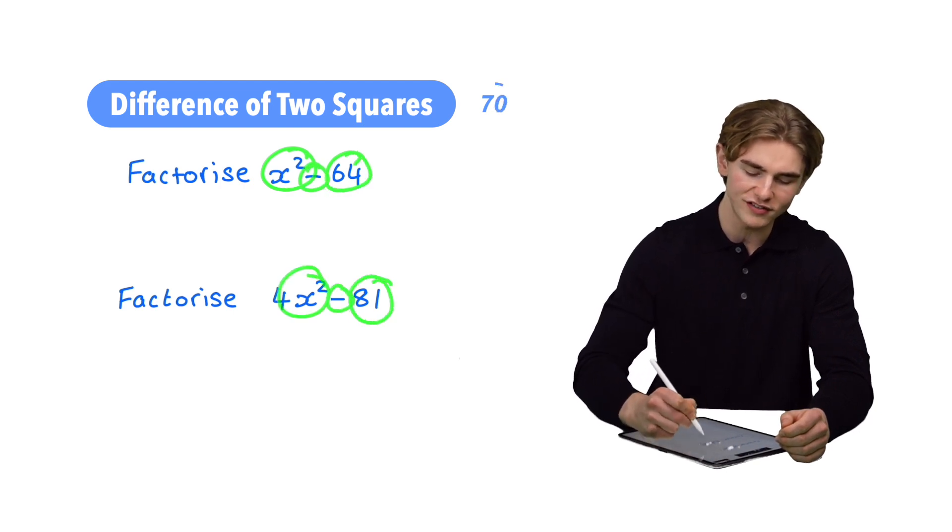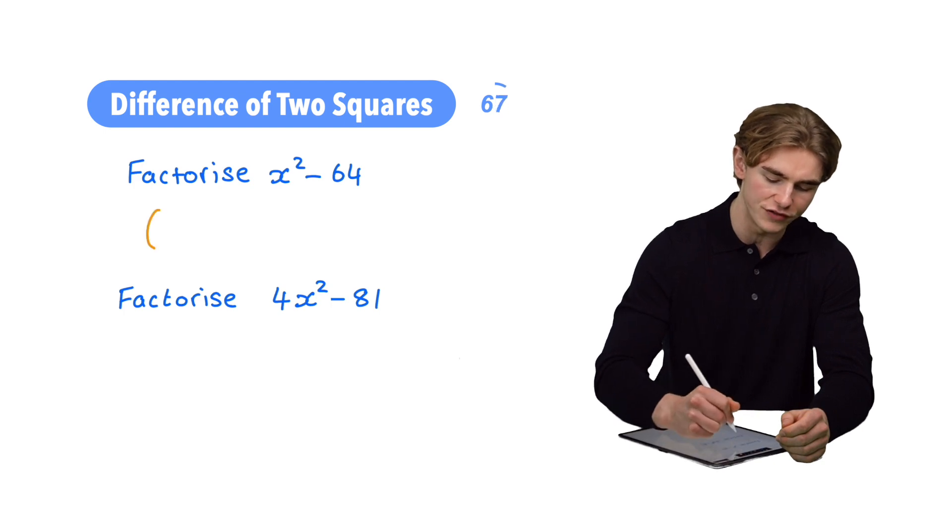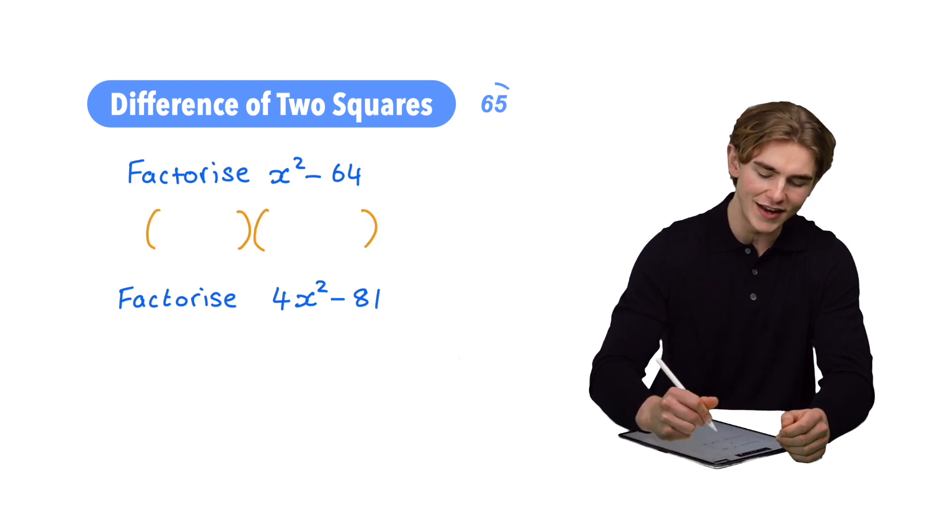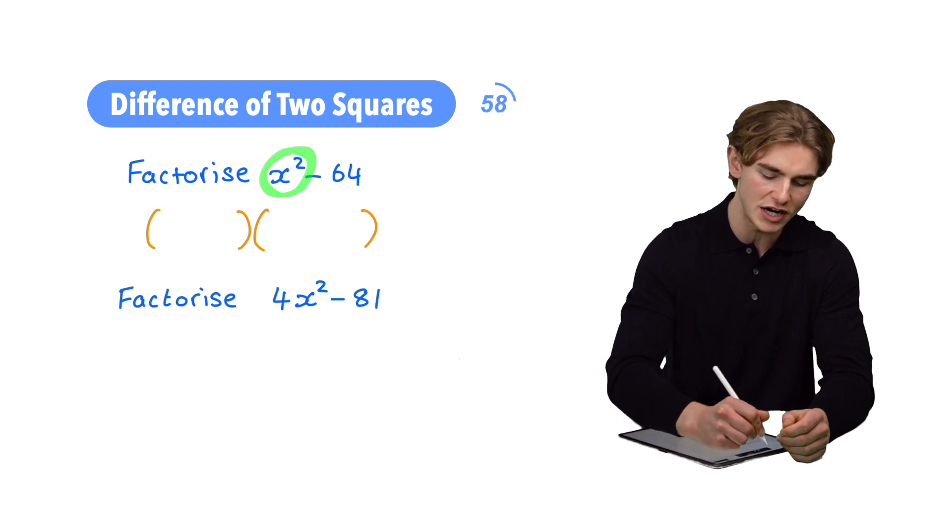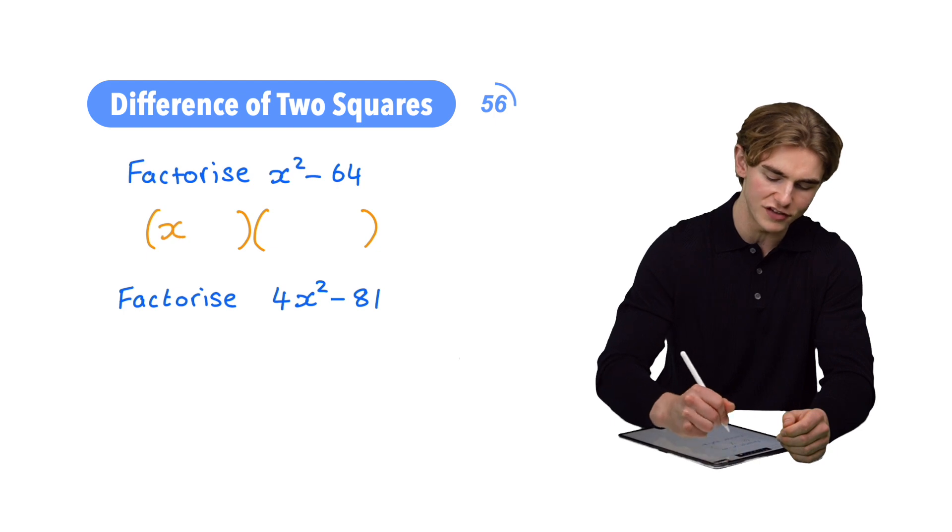Now, what are we going to do? We're going to start off by writing out a pair of double brackets and then at the start of our double brackets, we're going to write the square root of the first number in our expression. In the case of our first example, it's going to be x.